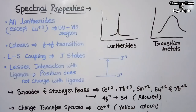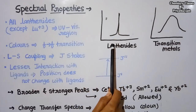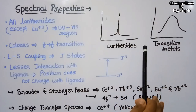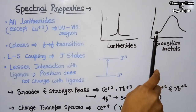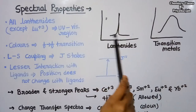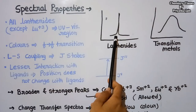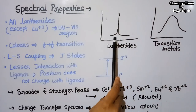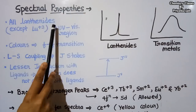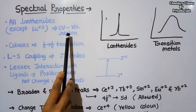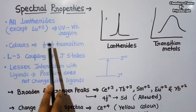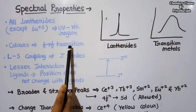In the spectra of lanthanides, we see sharp and weak signals, whereas the transition metals show broad peaks. A special characteristic is that in transition metals the position of signals varies with the ligands, while in lanthanides the position does not depend on the ligand. All lanthanides except Lu³⁺ absorb in the UV and visible regions. The colors of lanthanides are due to forbidden f-to-f transitions.